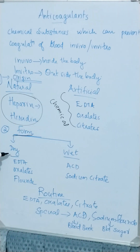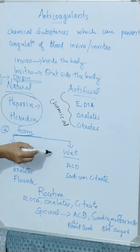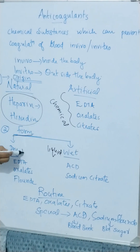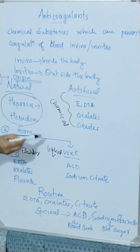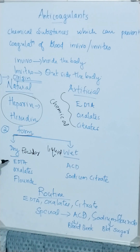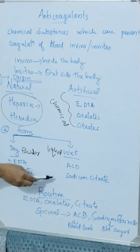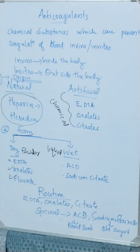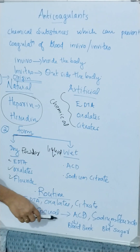According to the form in which they are available, anticoagulants are classified into dry and wet forms. EDTA, oxalates, and fluorides are dry anticoagulants, available as powder form. ACD and sodium citrate are wet anticoagulants, available as liquid form.